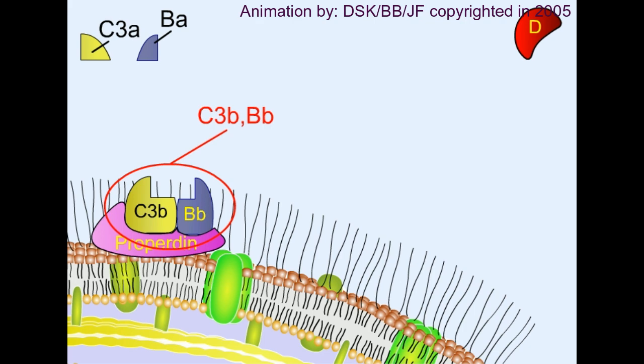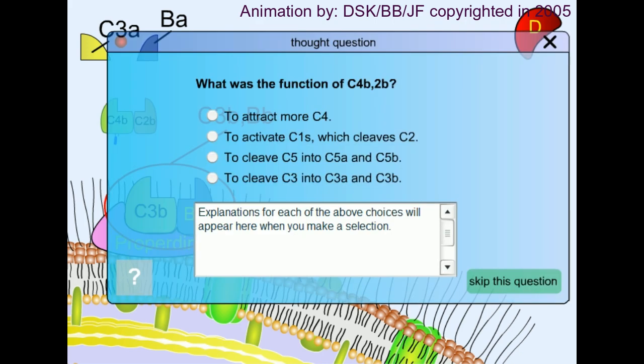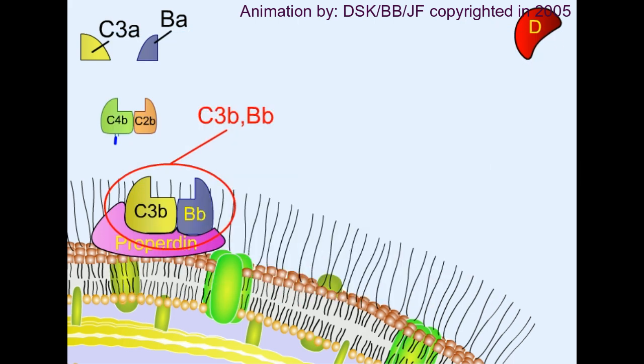It is a C3 convertase that resembles the classical pathway C4b-C2b complex, which also is a C3 convertase. Once you produce the C3 convertase of the alternative pathway by C3b-Bb, it can cleave C3 complement.